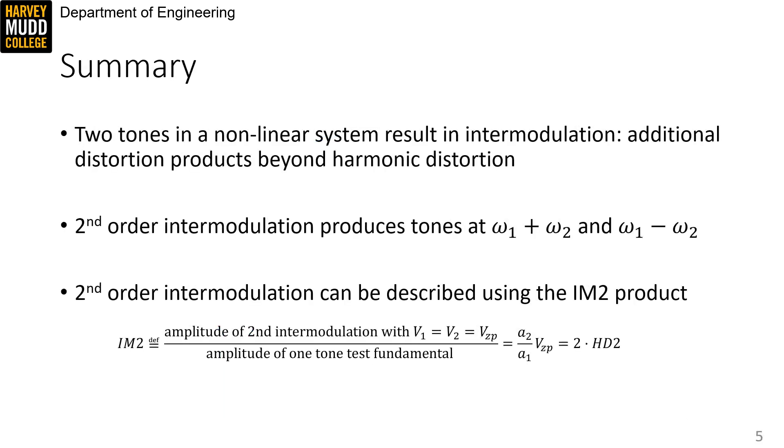So in summary, two tones in a nonlinear system result in intermodulation, which is an additional set of distortion products beyond harmonic distortion. And specifically, second-order intermodulation produces tones at omega-1 plus omega-2 and omega-1 minus omega-2. And second-order intermodulation can be best described using an IM2 product, which is the amplitude of the second-order intermodulation with V1 equal to V2 divided by the amplitude of a fundamental.